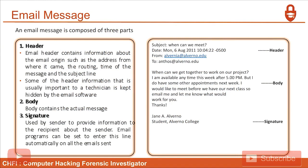An email message is composed of three parts: header, body, and signature. The email header contains information about the email's origin, such as the address it came from, the routing, the time of the message, and the subject line. Some header information important to a technician is kept hidden by the email software.